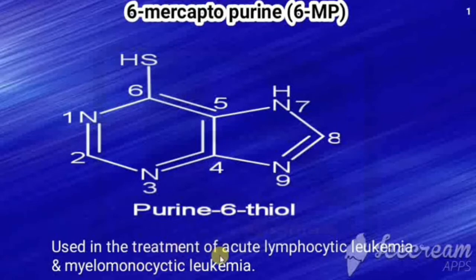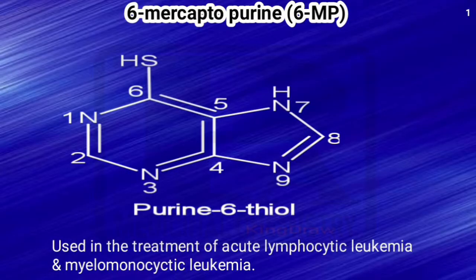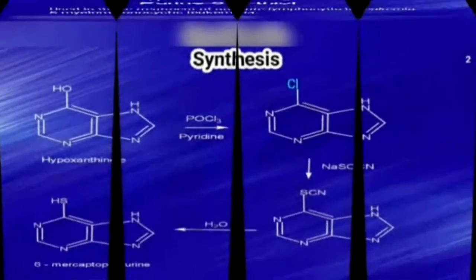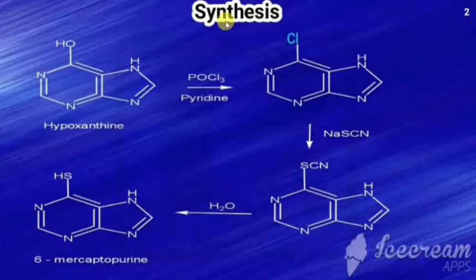6-Mercaptopurine is used in the treatment of acute lymphocytic leukemia and myelomonocytic leukemia. Now we will see the synthesis of 6-mercaptopurine.